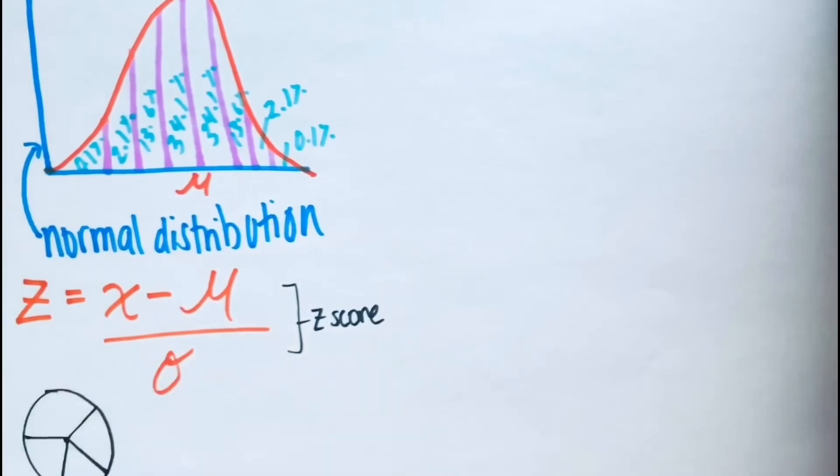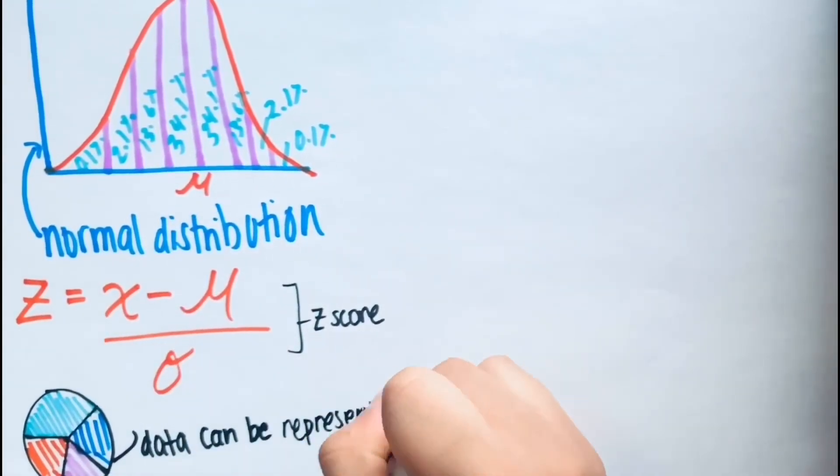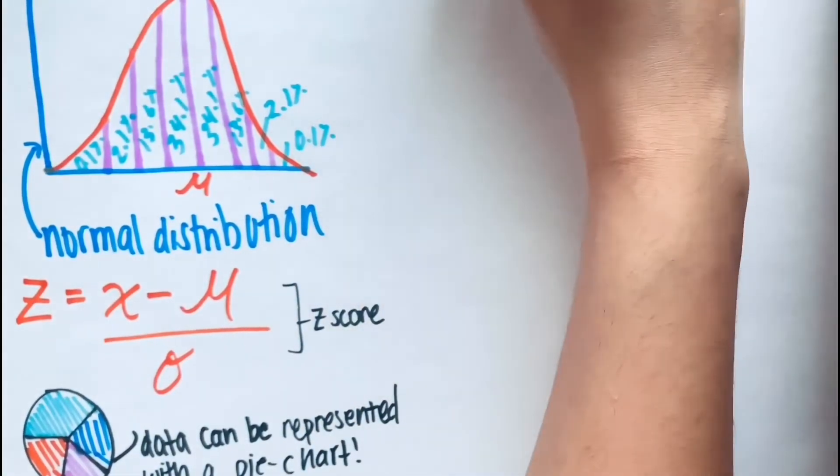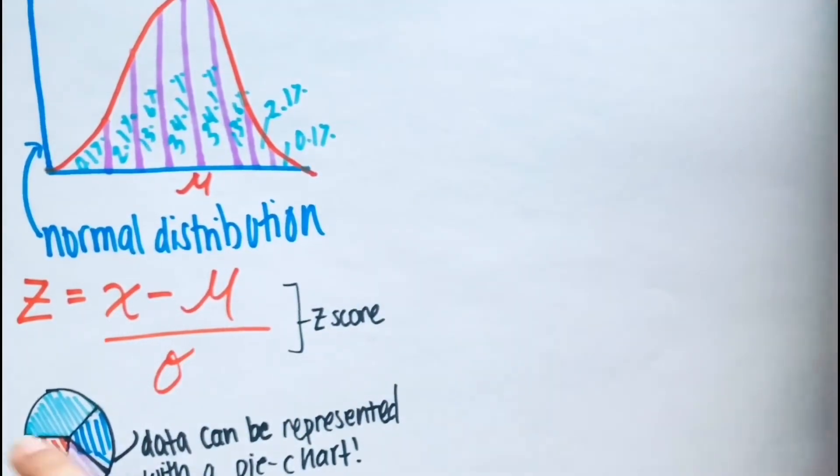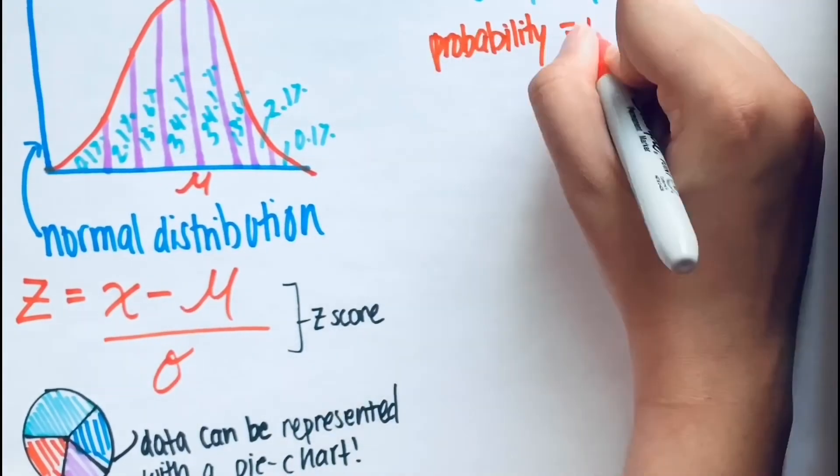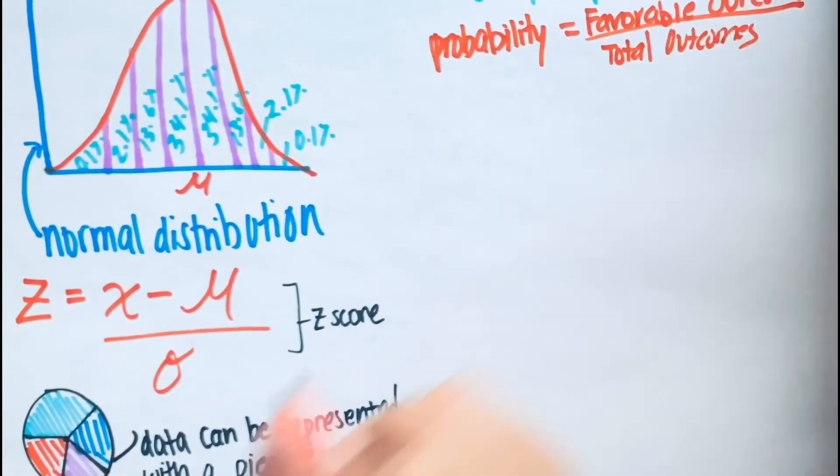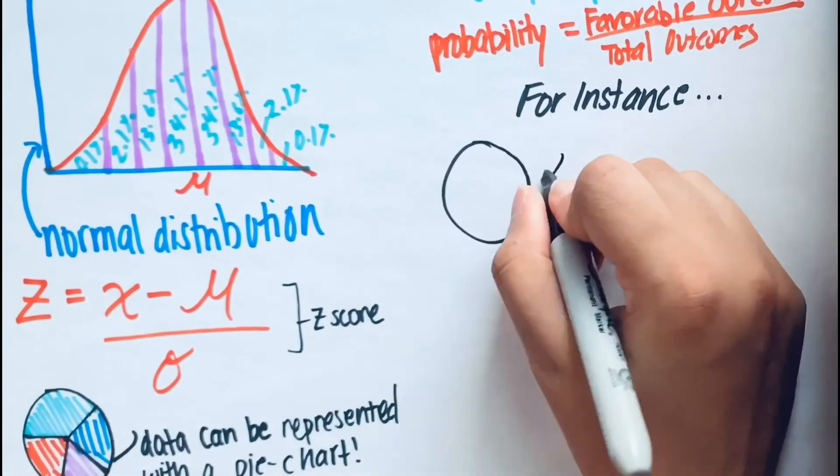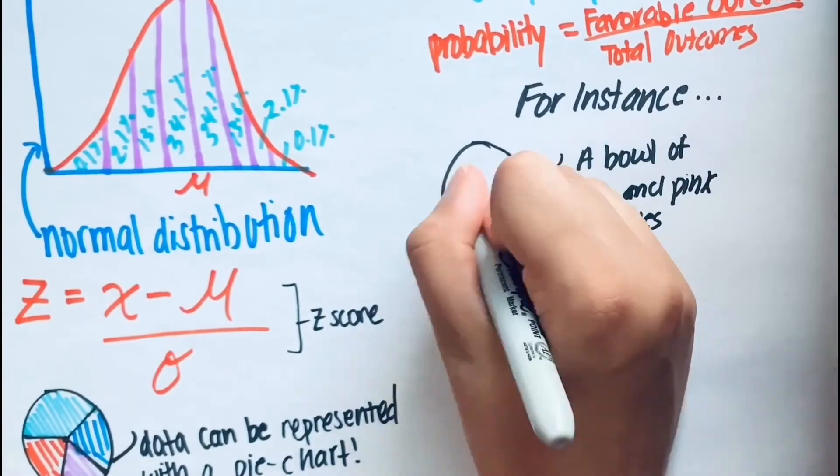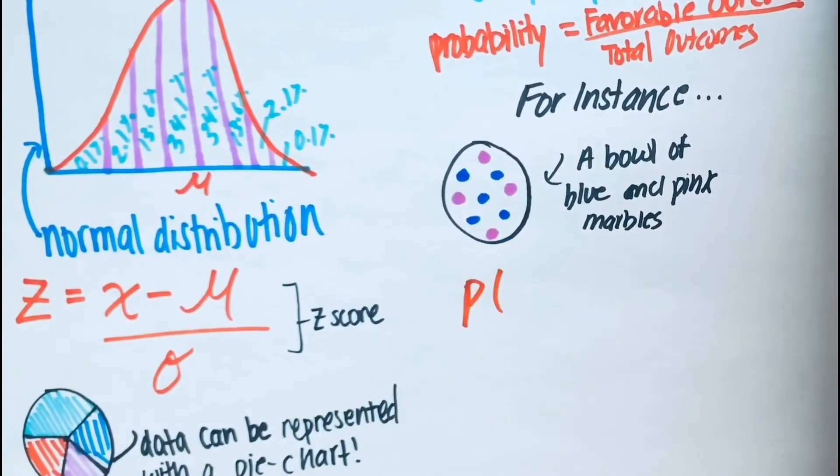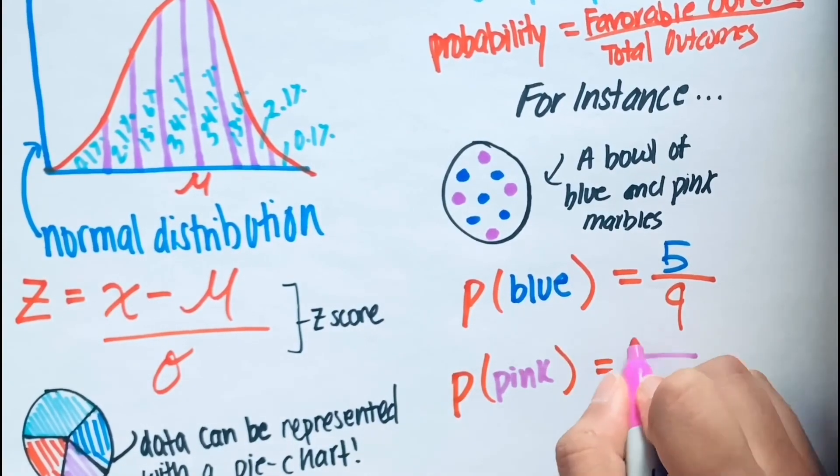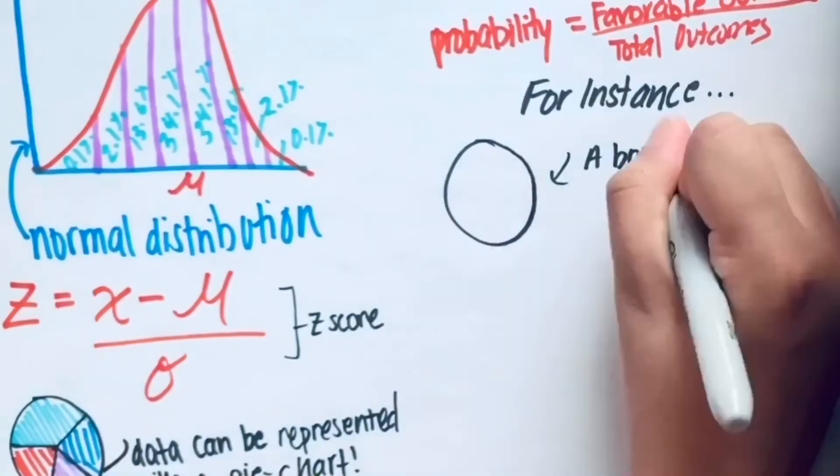Probability is a branch of mathematics concerning numerical descriptions of how likely an event is to occur or how likely it is that a proposition is true. Statistical and probability knowledge helps you use the proper methods to collect the data, employ the correct analysis, and effectively present the results. These areas are a crucial process behind how we make discoveries in science, make decisions based on data, and how we make predictions. I hope that you've learned about the branches of mathematics and their significance. Thank you!